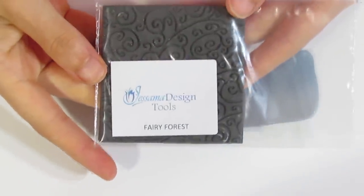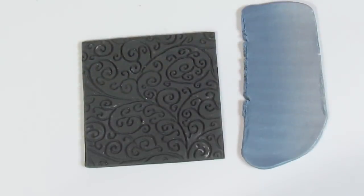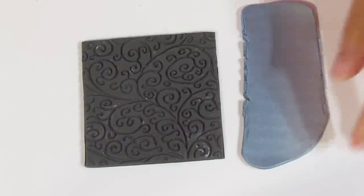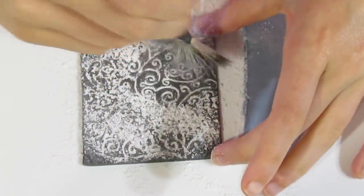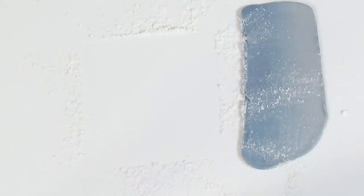Choose a texture stamp—this is the texture stamp I'm going to be using today. Grab some cornstarch to prevent our clay from sticking. I'm going to dust my stamp. I actually added a bit too much on my brush there.